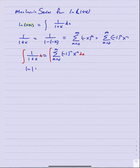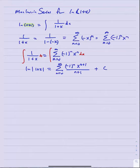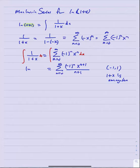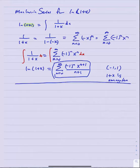We determined that the constant of integration was zero and the interval of convergence was negative one to one. On that interval, one plus x is non-negative, which is why we can drop the absolute values and say ln of 1 plus x generates this power series. Now let's go through the process again using Taylor's formula for the coefficients. For the function ln of 1 plus x, I just need to look at a few derivatives.